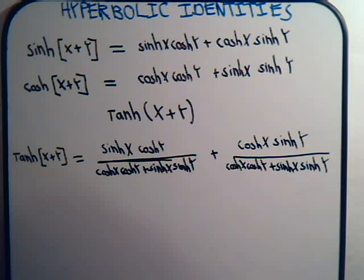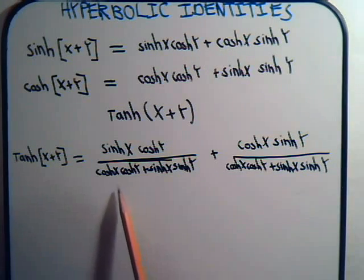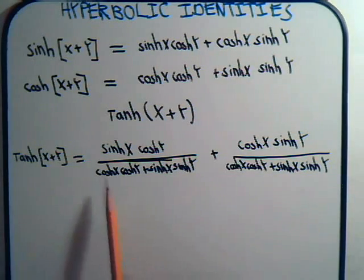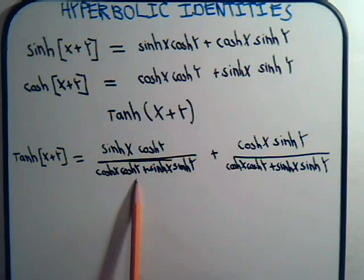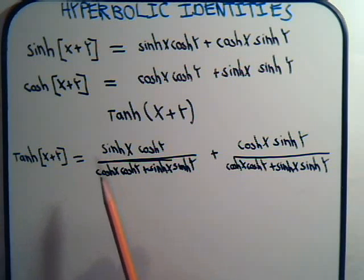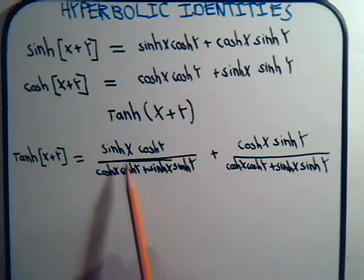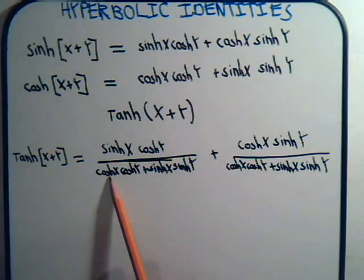Maybe there's something we might divide by that might simplify this. What if we went ahead and divided everything by the cosh(x)·cosh(y) term right here? This would give us a 1 in the denominator, plus we have this term divided by that. In the numerator, this divided by that — these would cancel out, and a hyperbolic sine over a hyperbolic cosine would give a hyperbolic tangent.